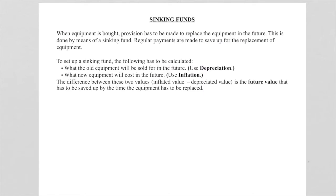As a reminder: when equipment is bought, provision has to be made to replace it in the future. This is done by means of a sinking fund, where regular payments are made to save up for the replacement. To set up a sinking fund, we need to calculate what the old equipment will be sold for in the future — that is depreciation — and what new equipment will cost in the future, which is inflation or compound interest.